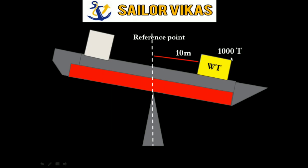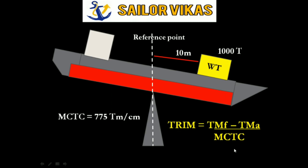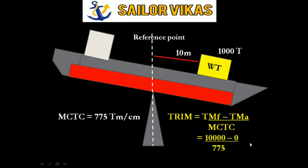Assume the weight of cargo loaded on the ship is 1000 tons and MCTC from the tables is 775 ton-meter per centimeter. The formula for trim is: trimming moment forward minus trimming moment aft, divided by MCTC. Trimming moment forward = 1000 × 10 = 10,000 ton-meter; aft = 0. So trim = 10,000 ÷ 775 = 12.9 centimeters.